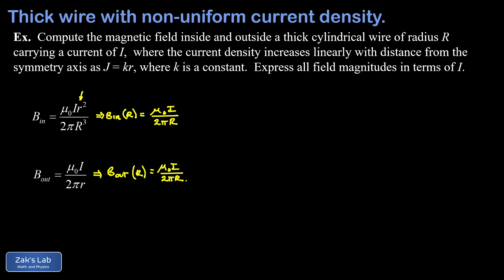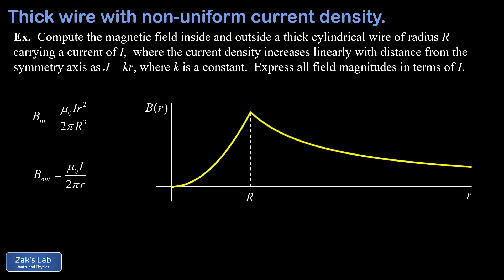Looking at the plot, the magnetic field magnitude increases quadratically from the center of the wire until we reach the surface at little r equals big R, marked by the dashed line. After that, for larger values of r, we see a 1/r drop off, with the field asymptotically going to zero. This video is part of a series on Ampere's law; in the next video we'll look at the magnetic field generated by a thick cylindrical shell conductor with uniform current density.